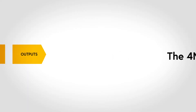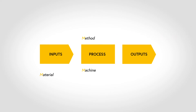Now let's turn to the four M's. In a process there's some kind of technology or machine that transforms materials as inputs into outputs using a method. The human or man is also always involved.